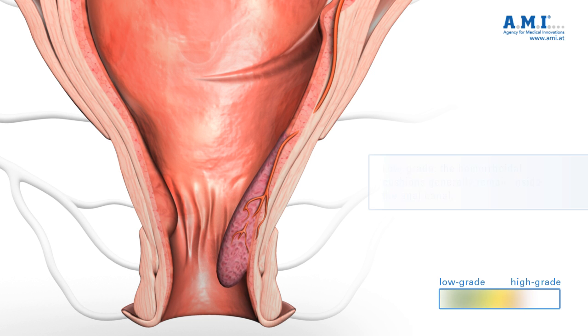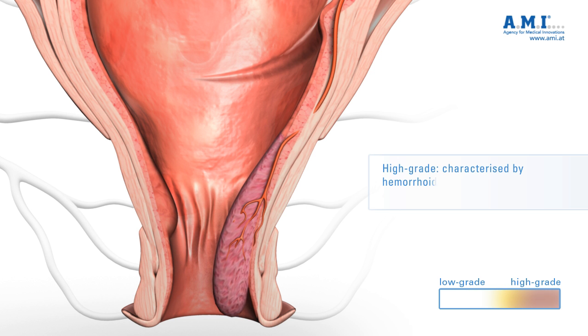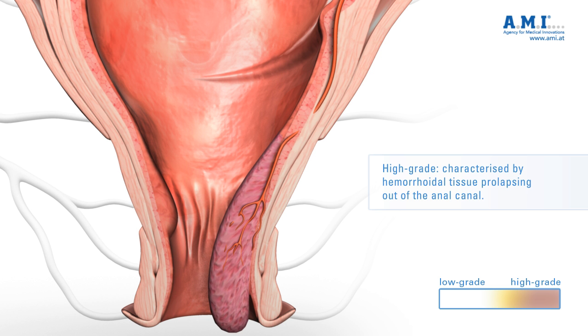High grades of hemorrhoids, that is grade three and four, are characterized by hemorrhoidal tissue prolapsing out of the anal canal, whereby grade three hemorrhoids can still be pushed back into position.